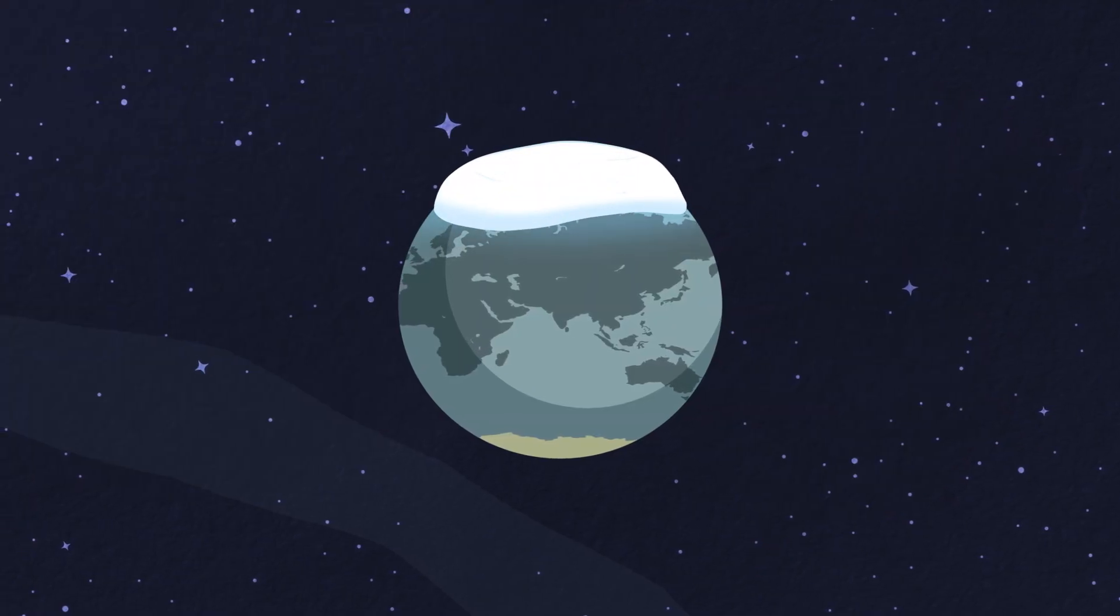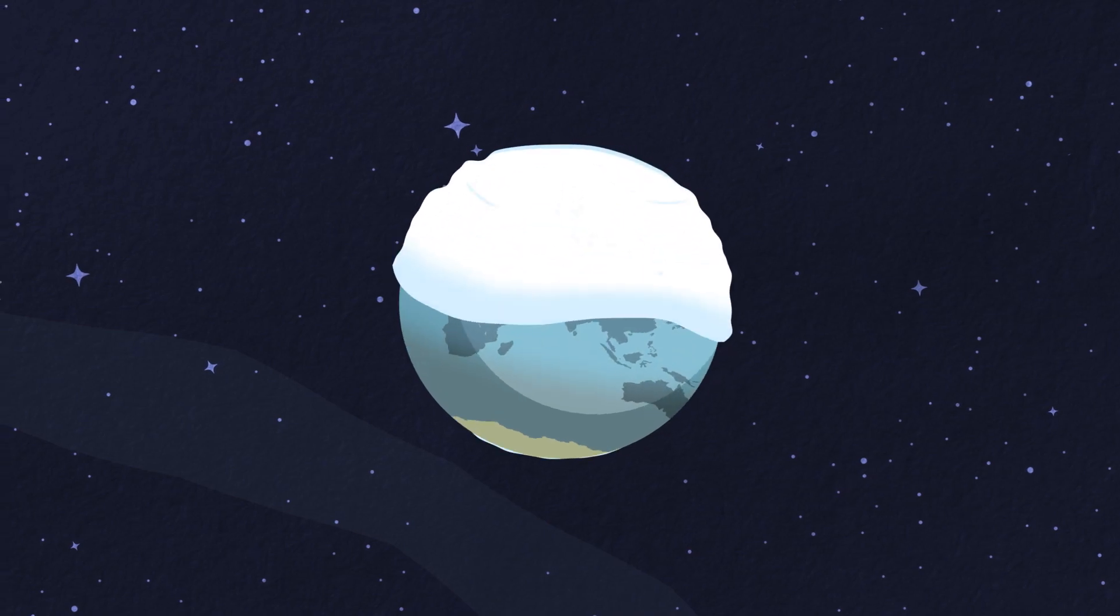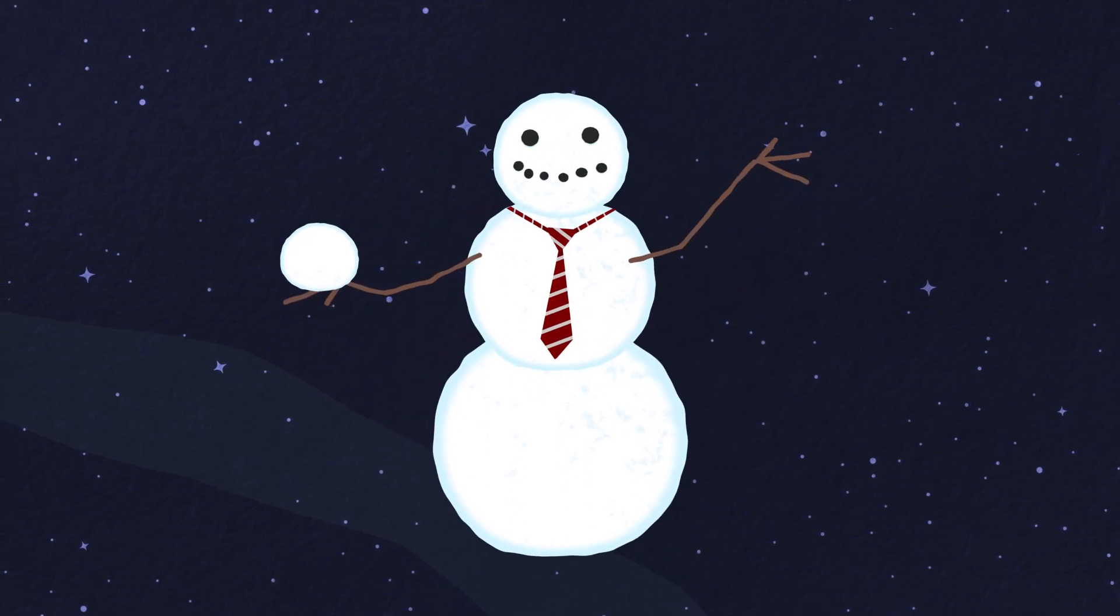The north of the earth gets colder and snow starts to fall. You can build a snowman and throw a snowball.